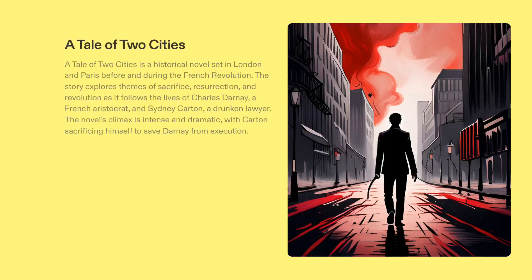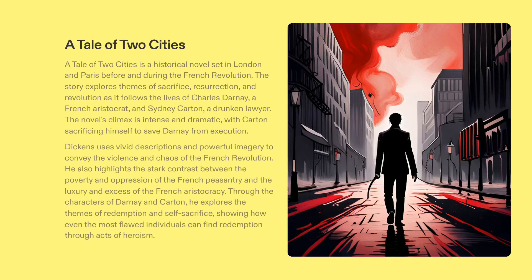Charles Dickens' A Tale of Two Cities is an iconic classic novel which explores themes of revolution, redemption, and sacrifice. Set during the French Revolution, the novel follows the lives of two characters: Charles Darnay, an aristocrat, and Sidney Carton, a lawyer. The distinction between the opulence of the French aristocracy and the repressed French peasantry is brought to life through powerful imagery and vivid description, highlighting the violence and disorder of the era. The story culminates in Carton's emotional redemption, which he achieves through a heroic act of self-sacrifice. A Tale of Two Cities is an extraordinary novel which provides a unique understanding of a revolutionary period of history.